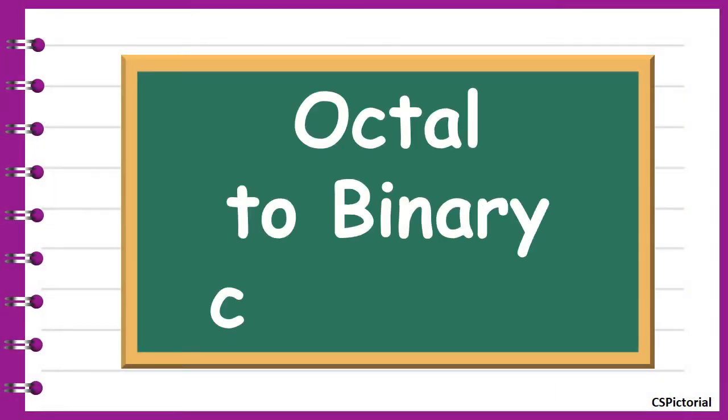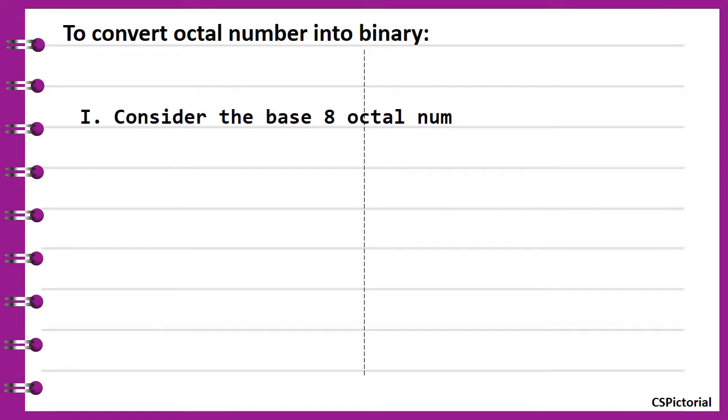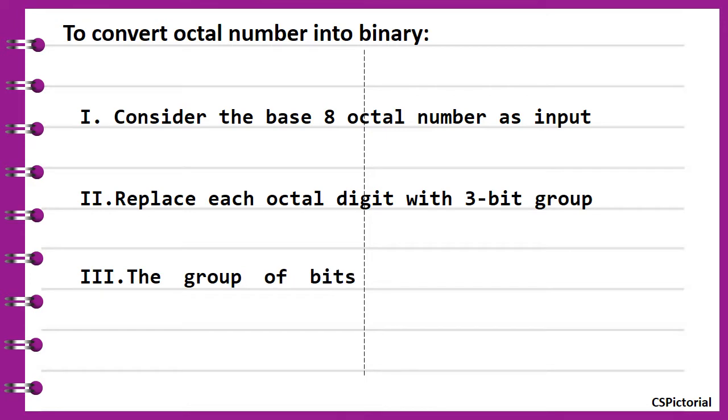First is the octal to binary conversion. These are the steps to convert base 8 octal number into base 2 binary number. We will understand these steps with simple examples.